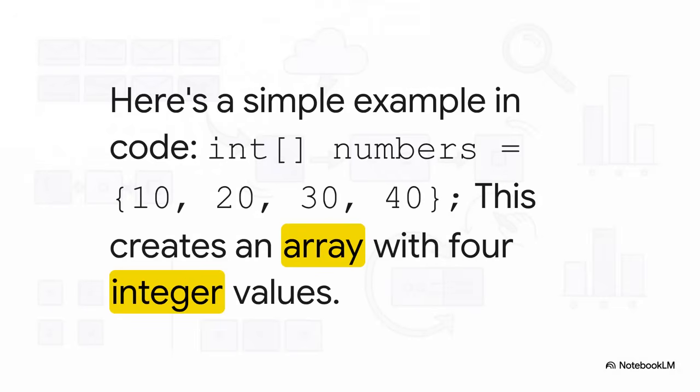Let's see how that idea looks in actual code. See this line? We're creating an array for integers, we're calling it 'numbers', and we're immediately putting four things into our four boxes: 10, 20, 30, and 40. It's as simple as that.